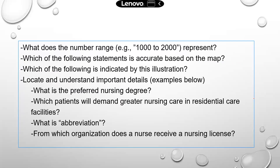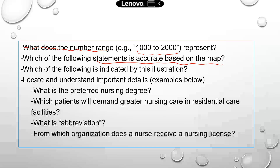Some examples of questions are: what does the number range represent? For example, if there's a graph with a number range like 1000 to 2000 or 1997 to 2001, you need to know what those ranges represent based on information available from the graphic. Another question type is: which of the following statements is accurate based on the map? This tests whether you can read a map correctly. This is one of the practice questions in the official TEAS study menu.